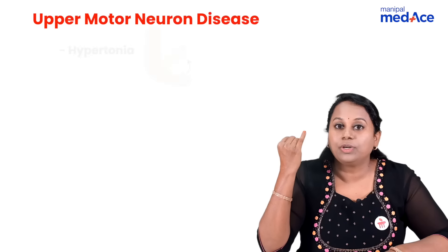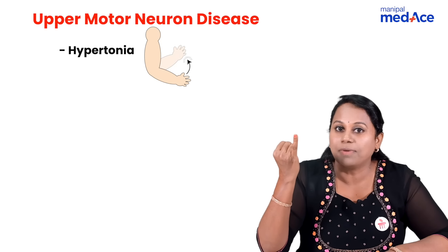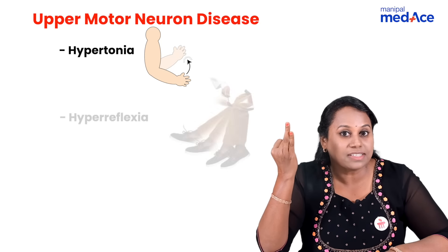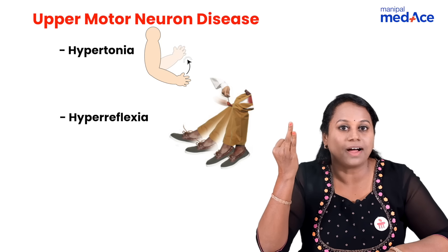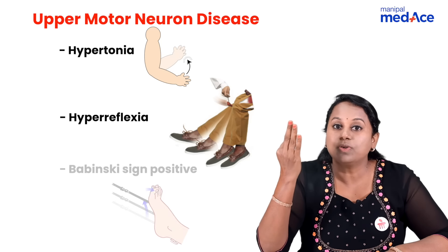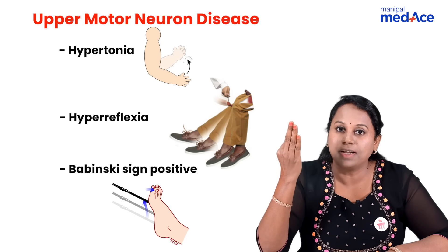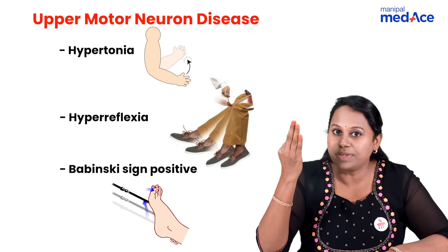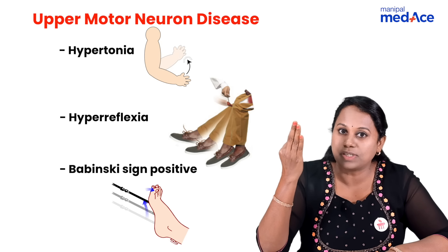Clinical features of upper motor neuron disease — three things are up. Tone is up: hypertonia. Reflexes are up: hyperreflexia. And toes go up — this is called Babinski sign positive.